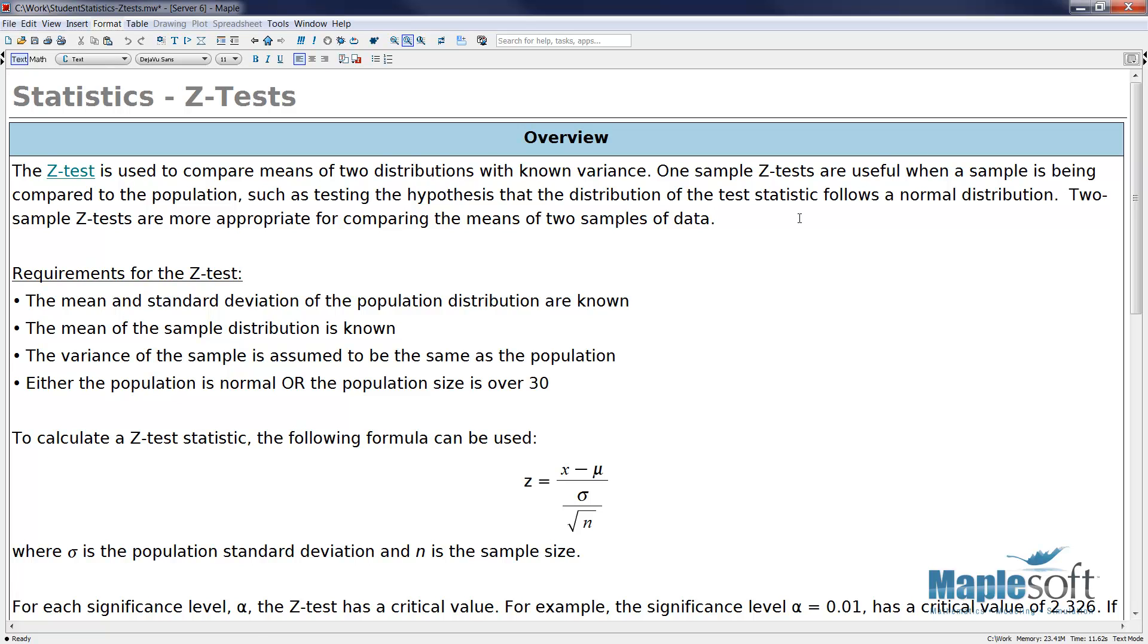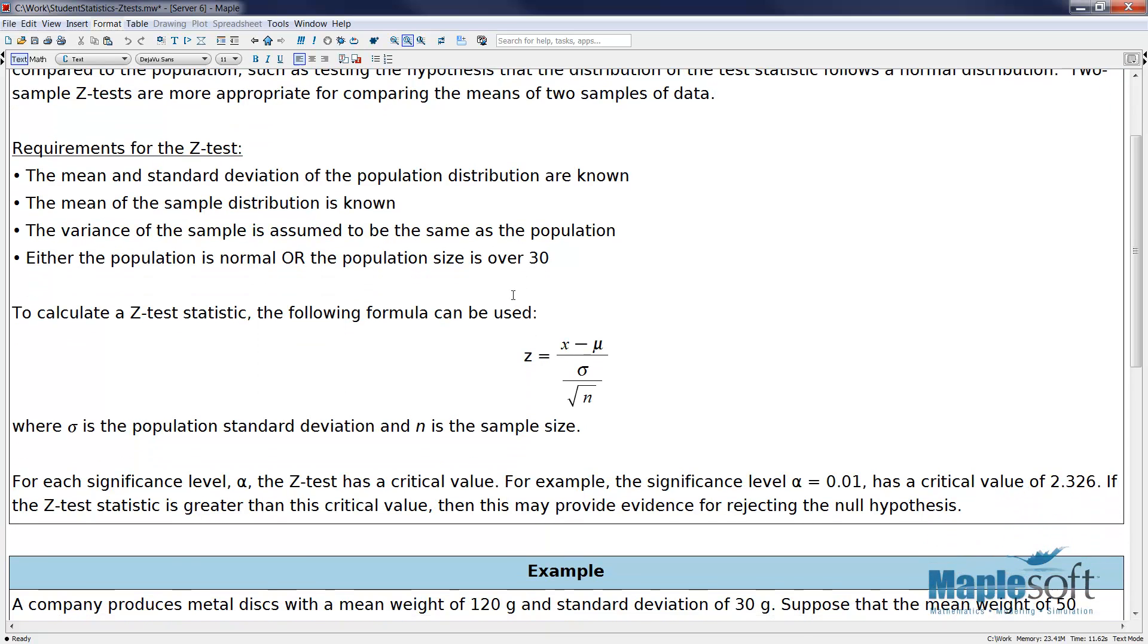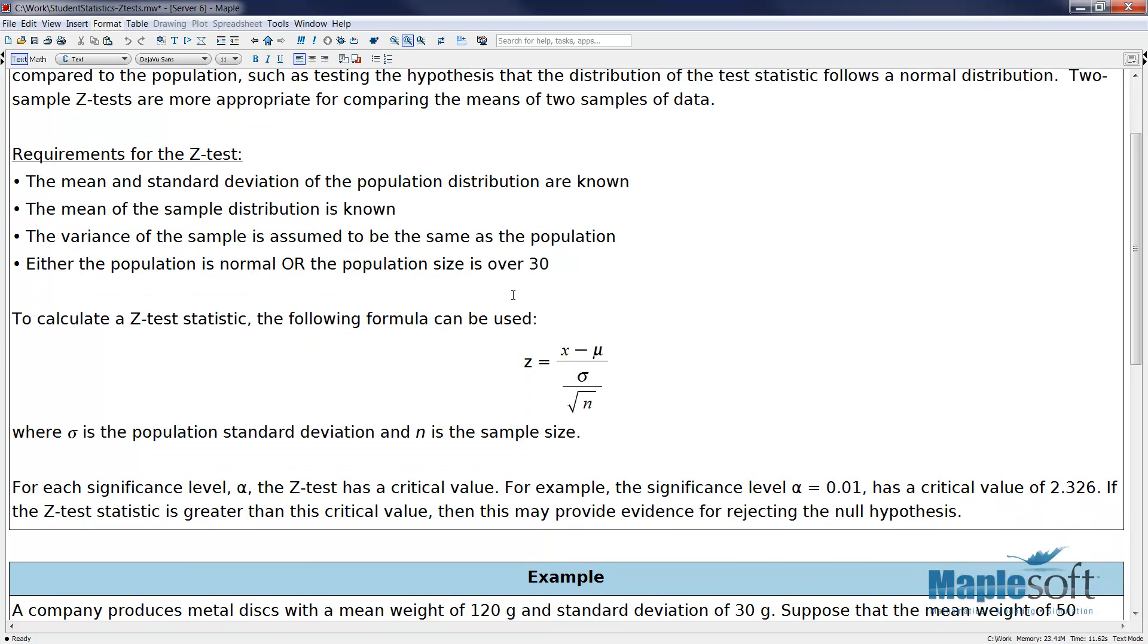There are a few requirements for the z-test. The mean and standard deviation of the population distribution are known. The mean of the sample distribution is known. The variance of the sample is assumed to be the same as the population. And either the population is normal or the population size is over 30.